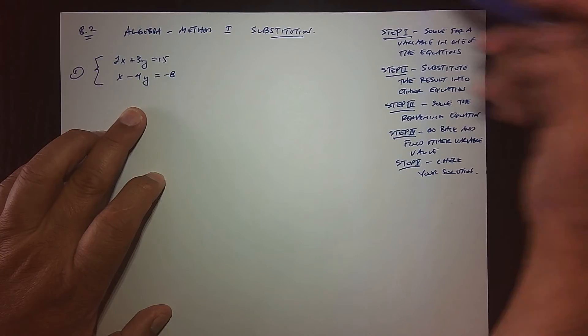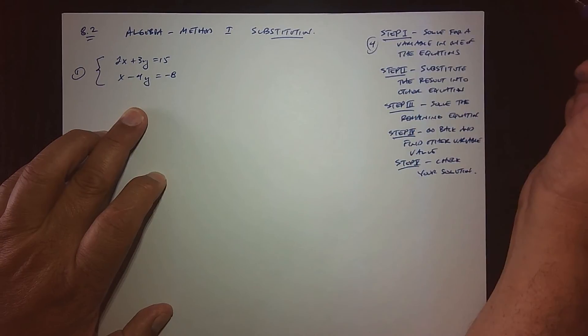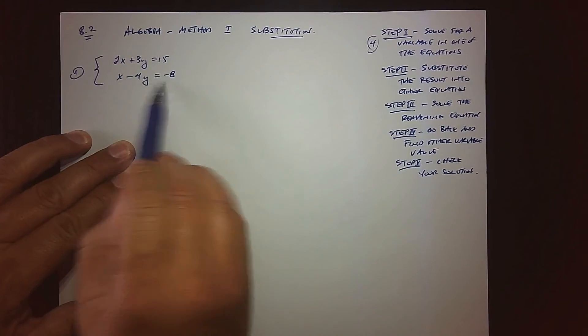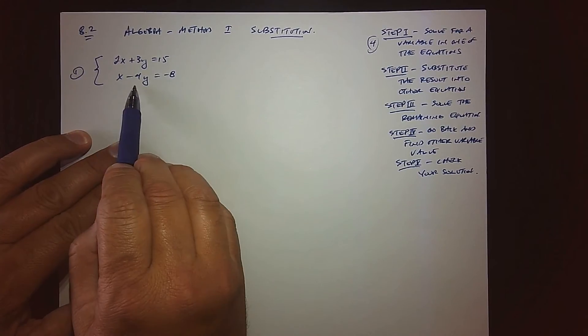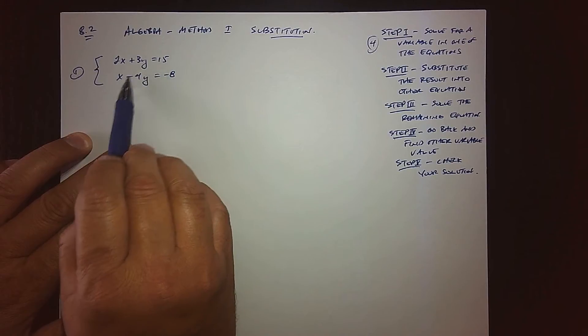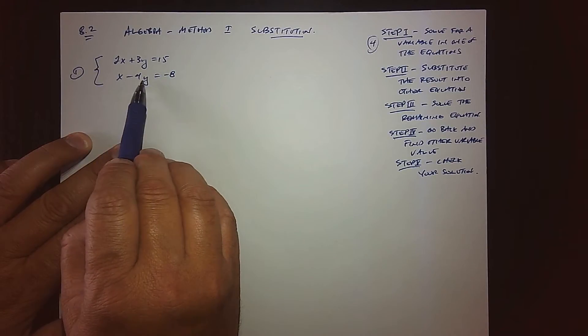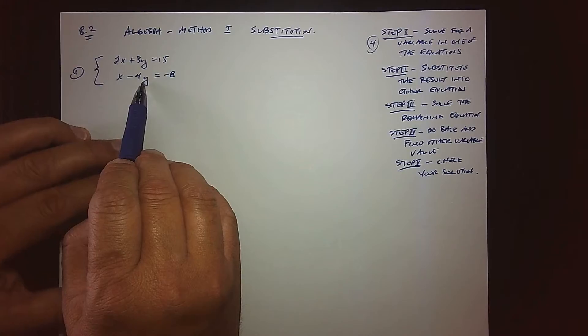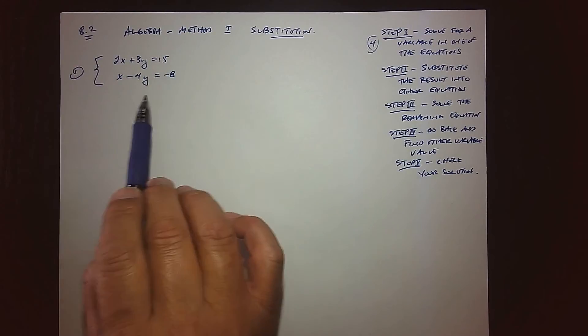At this stage you have four choices because I have two equations and two unknowns. Do you want to solve for x? Do we want to solve for y? Do we want to solve for this x or do you want to solve for this y? Sometimes there's no easy choice, sometimes there's an obvious choice.